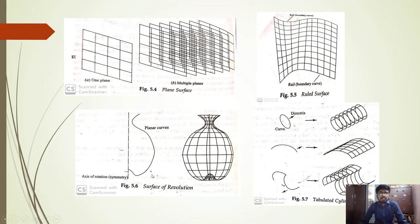The next type is the surface of revolution. In a surface of revolution, we have a curve which is rotated about an axis to form the surface. This is an axisymmetric surface.